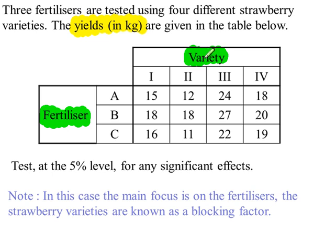Different varieties of strawberry may respond differently to each type of fertiliser. So there are two sources of variation here: the type of fertiliser and the variety of strawberry used. So we're going to do a two-way ANOVA test.